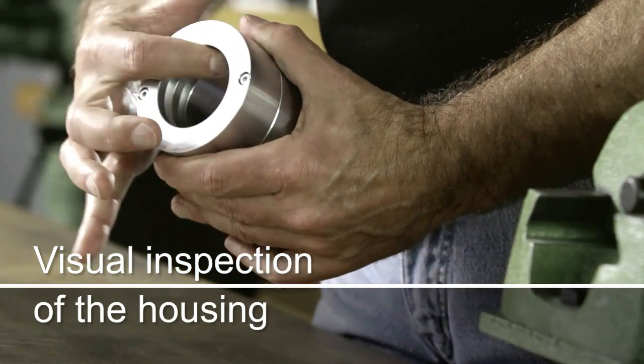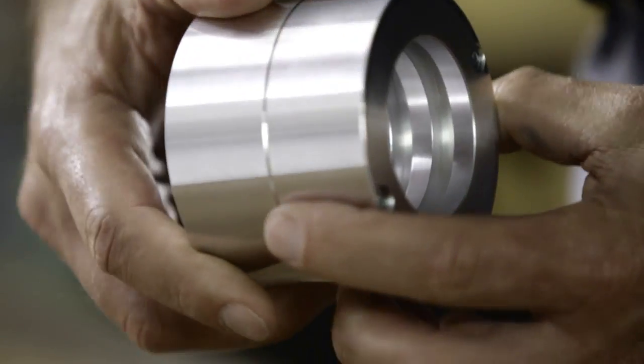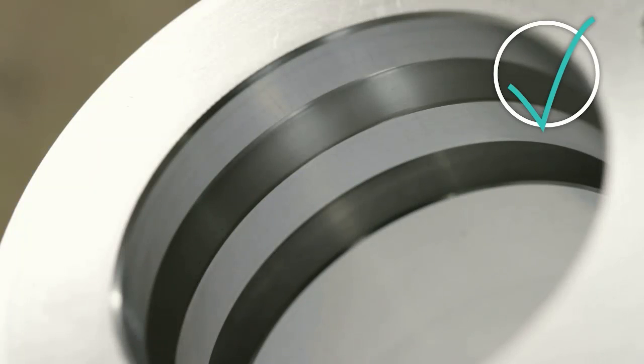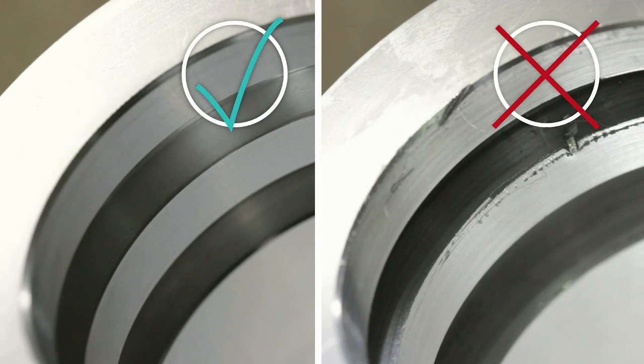Beyond the seal itself, the grooves must be carefully examined. The bottom, walls and edges of the grooves must be free of damage, such as burrs and nicks.